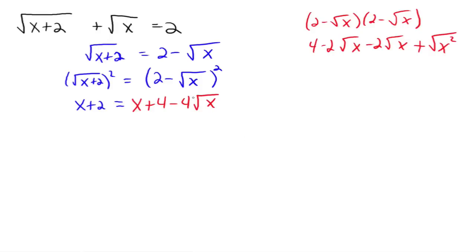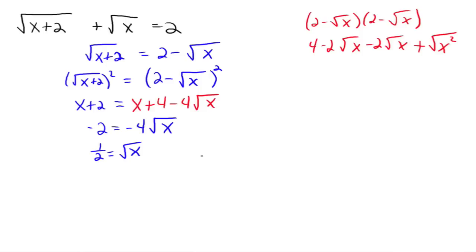Just like before, isolate this radical. Subtract x from both sides, they go away. Subtract 4 from both sides, and you get negative 2 is equal to negative 4 times the square root of x. Then divide by negative 4, and you get 1 half is equal to the square root of x. Now you've got the radical isolated. Square both sides, and you get x equals 1 fourth.